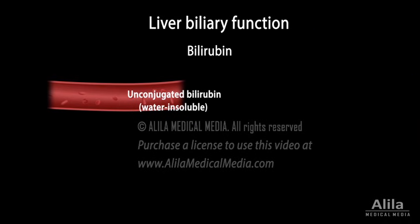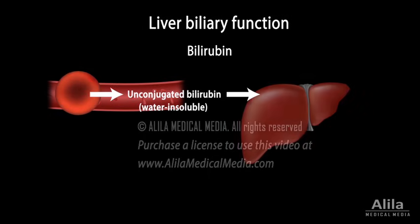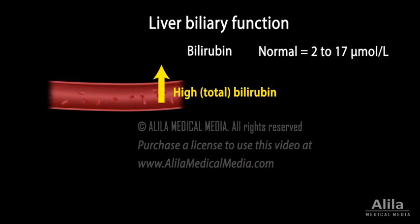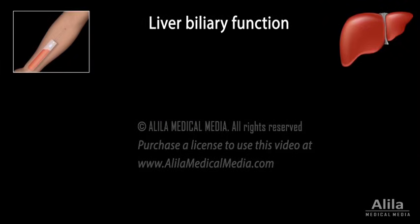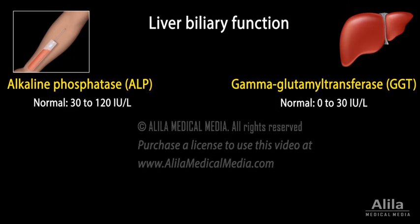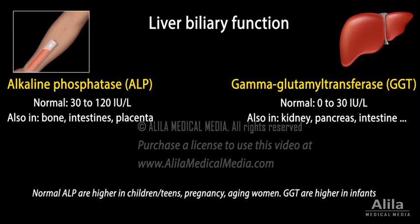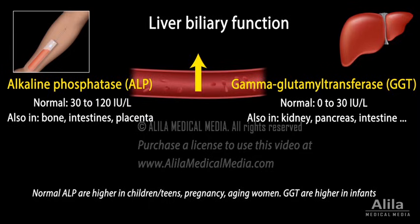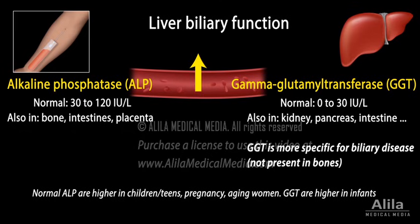Bilirubin is a water-insoluble product of normal heme breakdown. It is transported to the liver loosely bound to albumin. The liver converts bilirubin into a water-soluble form to be secreted into bile. Accumulation of bilirubin in the blood indicates problems with biliary function. High levels of bilirubin give the skin and the whites of the eyes a yellowish color, known as jaundice. Besides bilirubin, two enzymes are measured for biliary function: alkaline phosphatase, ALP, and gamma-glutamyl transferase, GGT. Both enzymes are found in the tiny bile ducts, called canaliculi, of the liver, but are also present in several other tissues. Damage to the biliary tract releases these enzymes into the bloodstream. Elevated GGT is more specific for biliary disease compared to ALP.